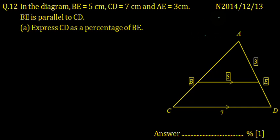2014 paper 1, number 12. In the diagram, BE equals 5 centimeters, CD equals 7 centimeters, and AE equals 3 centimeters. BE is parallel to CD.